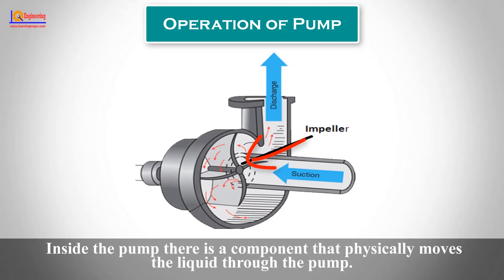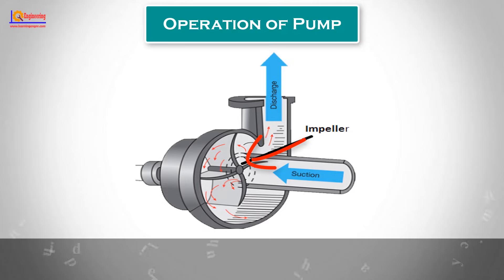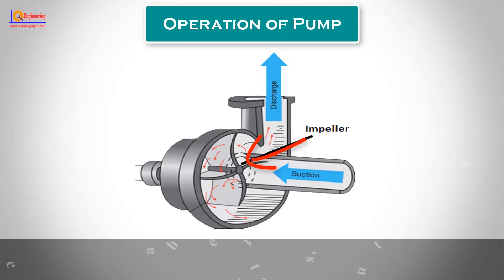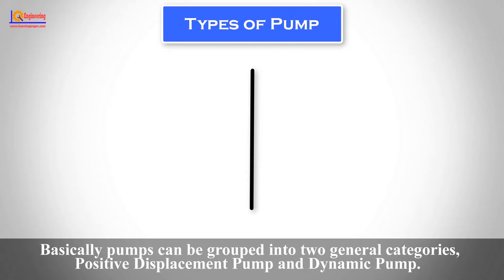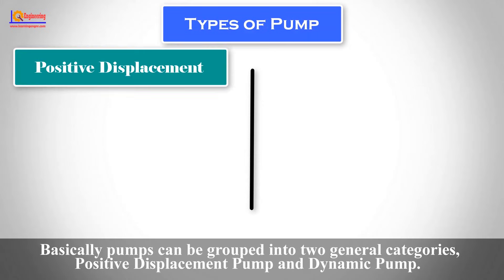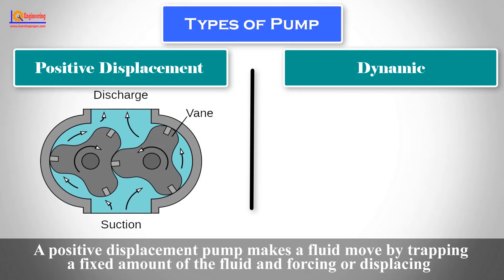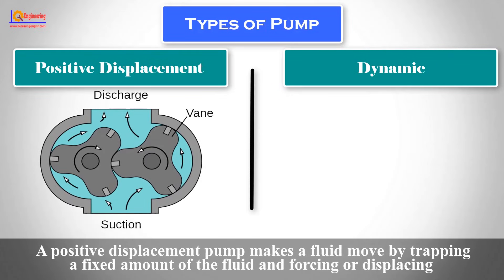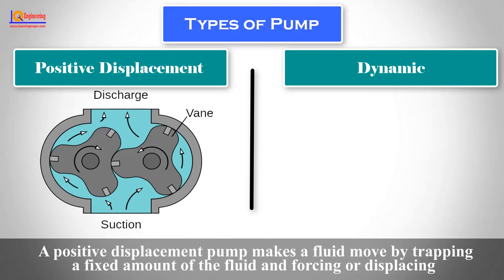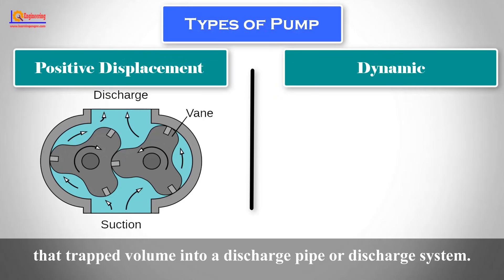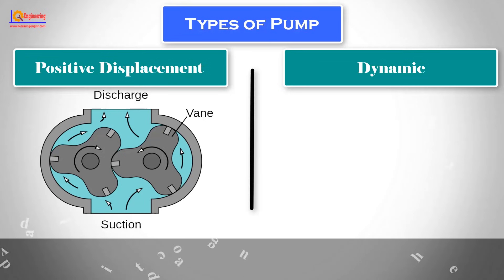Inside the pump there is a component that physically moves the liquid through the pump. The type of component used determines the type of pump. Basically, pumps can be grouped into two general categories: Positive Displacement Pump and Dynamic Pump. A positive displacement pump makes a fluid move by trapping a fixed amount of the fluid and forcing or displacing that trapped volume into a discharge pipe or discharge system.